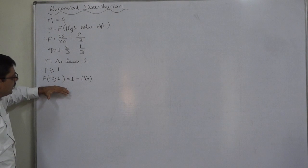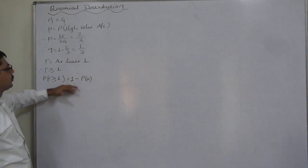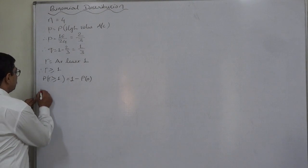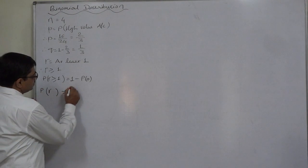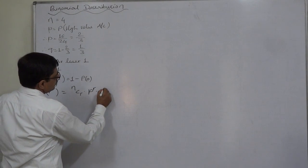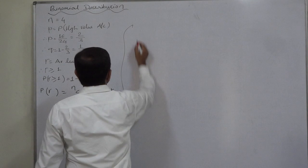And P(r ≥ 1) can easily be calculated through 1 minus P of none or P(0). So probability of r successes is nCr into p raise to r into q raise to n minus r. Let us make calculations.